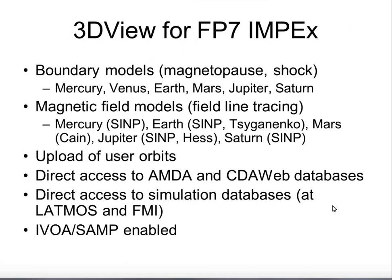The functionalities developed for 3DVue in this frame include boundary models like magnetopause and shock, and magnetic field models — which is an important feature I will come back to, as it is the key link between spatial observation and surface maps, since particles travel along magnetic field lines. We can upload user orbits, and we have direct access to databases like AMDA or the CIDO web for plasma physics, as well as simulation databases. We also enabled some IVOA protocols.